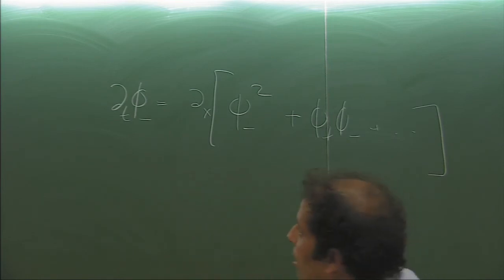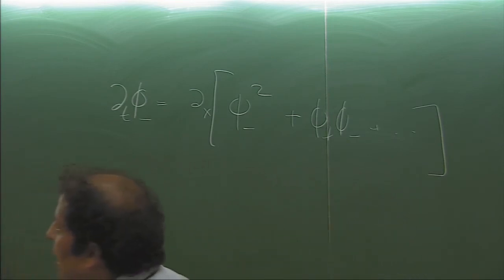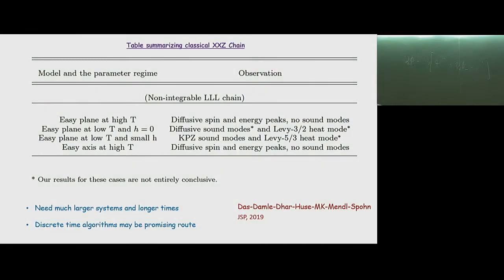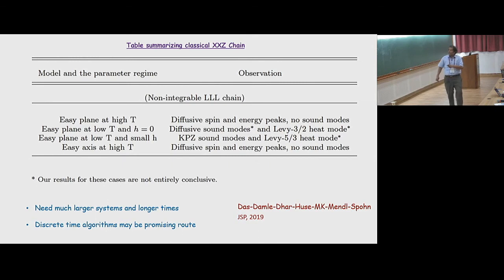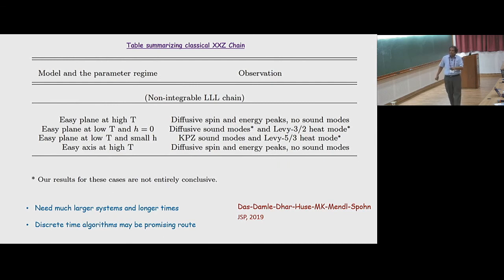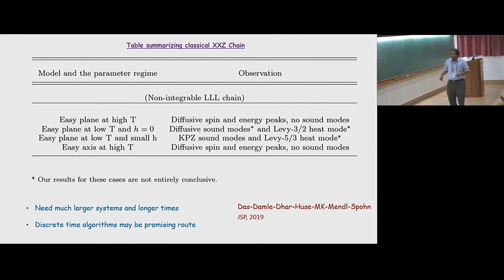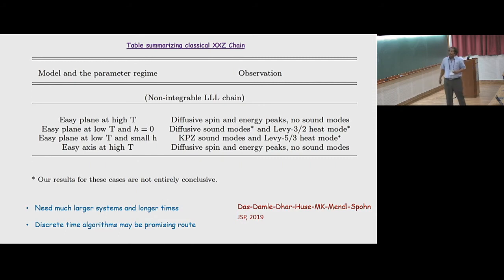This is a summary table for the non-integrable lattice Landau-Lifshitz equation. It is entirely different from the quantum case. At easy plane and high temperature, both spin and energy are diffusive. Easy plane at low temperature and zero magnetic field: diffusive sound modes and Lévy 3/2 heat mode. Easy plane at low temperature and small magnetic field: KPZ sound modes and Lévy heat mode. Easy axis at high temperature: diffusive spin and energy peaks. These results need longer systems and times to be fully confirmed.